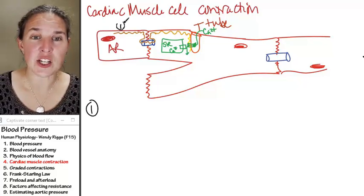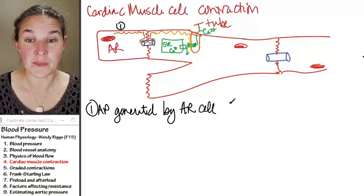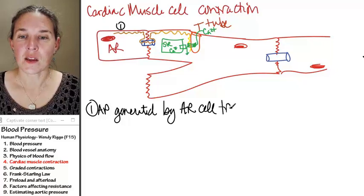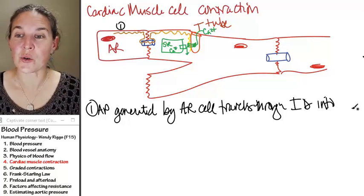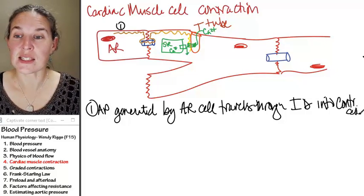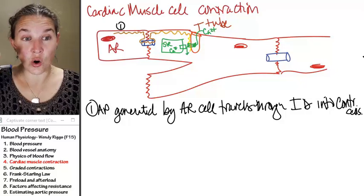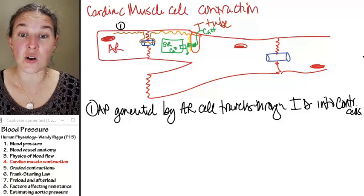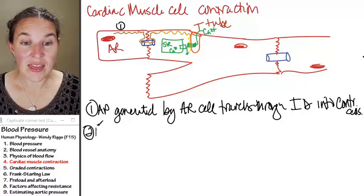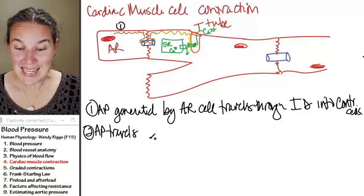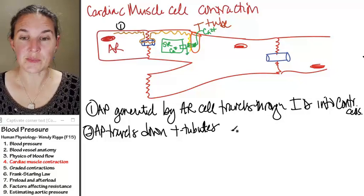Step one: the action potential generated by the auto-rhythmic cell travels down the cell membrane through intercalated discs into contractile cells. That's how the action potential arrives. Does the action potential get generated by the nervous system? No — it gets generated by the auto-rhythmic cell. Step two: the action potential then travels down the T-tubules in the contractile cell.